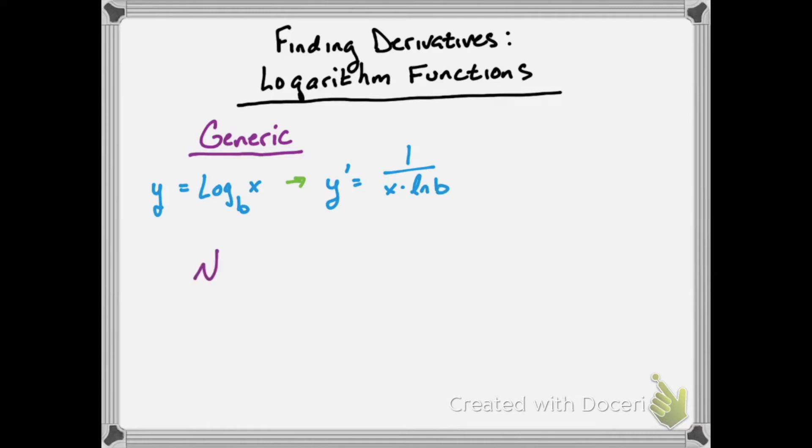Since the natural log has a base of e, its derivative is a little bit simpler. If you have y equals the natural log of x, its derivative is just 1 over x.